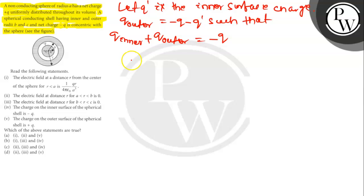The electric field inside the conductor should be 0, so B < R < C.